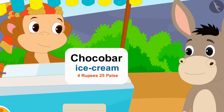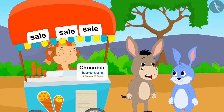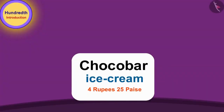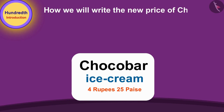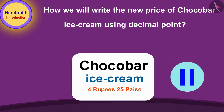Seeing the new price of Chocobar ice cream — 4 rupees 25 paise — Bhoala told Bunny, I can write the new price of the ice cream using decimal point. Children, can you tell how we will write the new price of Chocobar ice cream using decimal point? If you wish to, you can stop the video and find the answer.